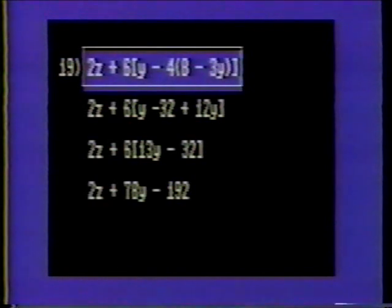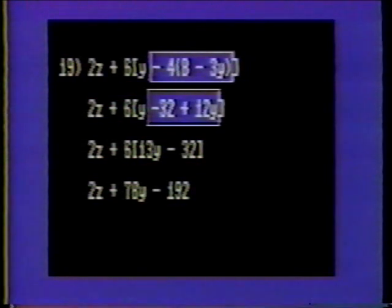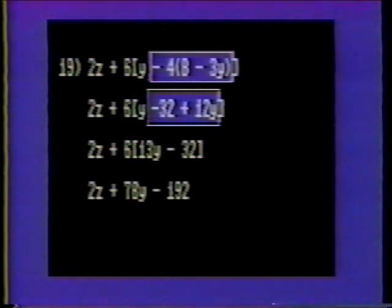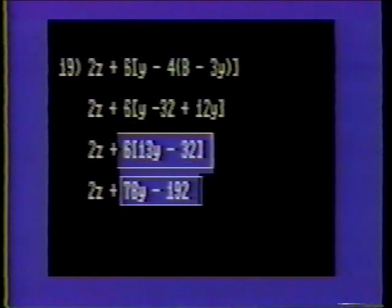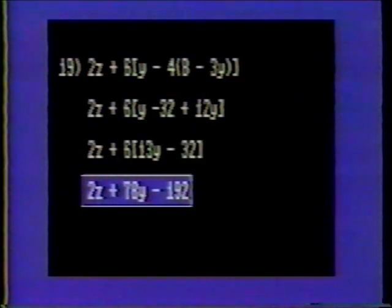Number nineteen: two z plus six times y minus four times eight minus three y. Solve for the items within parentheses first, which is eight minus three y. Eight minus three y cannot be further simplified because we don't know the value of y. Thus, our first operation is to multiply eight minus three y by negative four, which is negative thirty-two plus twelve y. Next, simplify the items within brackets, which is y minus thirty-two plus twelve y, giving us thirteen y minus thirty-two. Multiply thirteen y minus thirty-two by six to obtain seventy-eight y minus 192. The final solution is two z plus seventy-eight y minus 192.